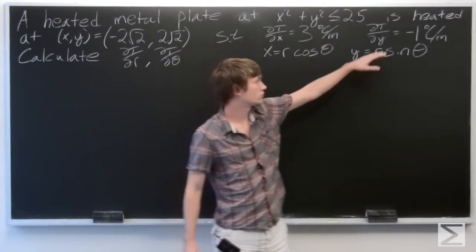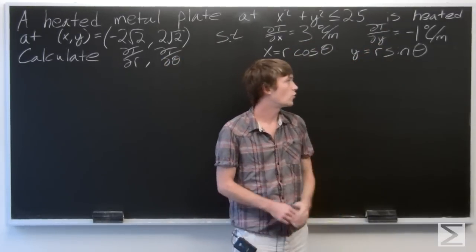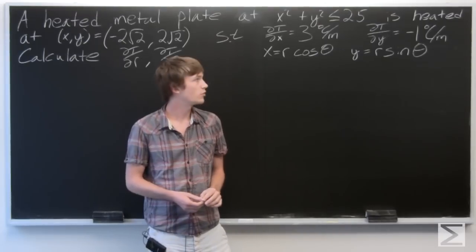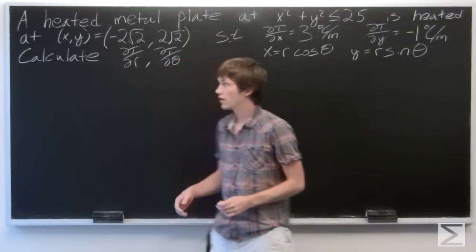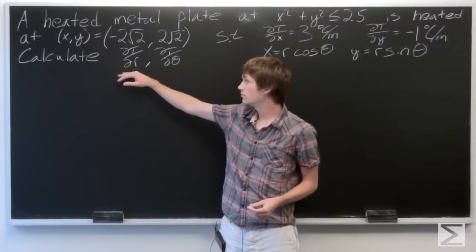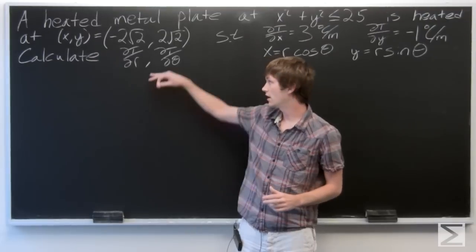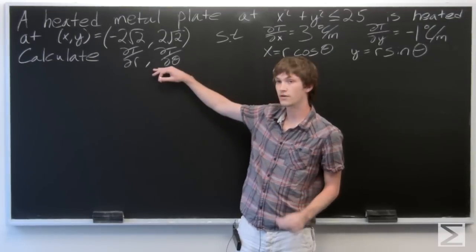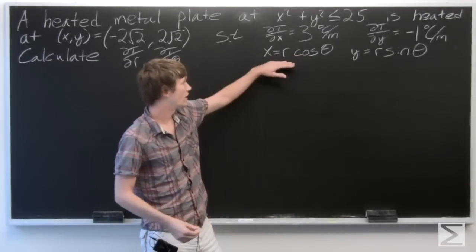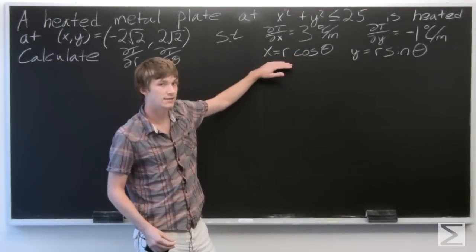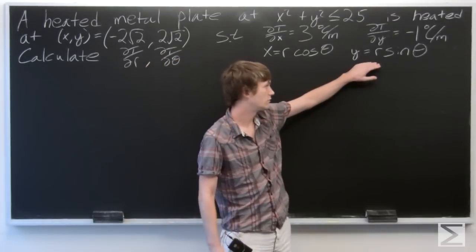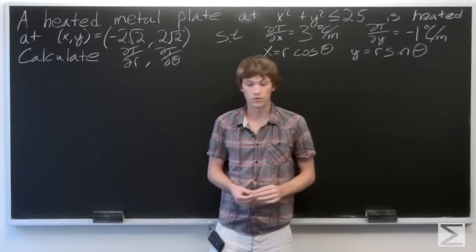And the partial derivative of the temperature with respect to y is equal to -1 degrees Celsius per meter. We're asked to calculate the partial derivative of the temperature with respect to r and the partial derivative of the temperature with respect to θ, where x = r cosθ and y = r sinθ in polar coordinates.